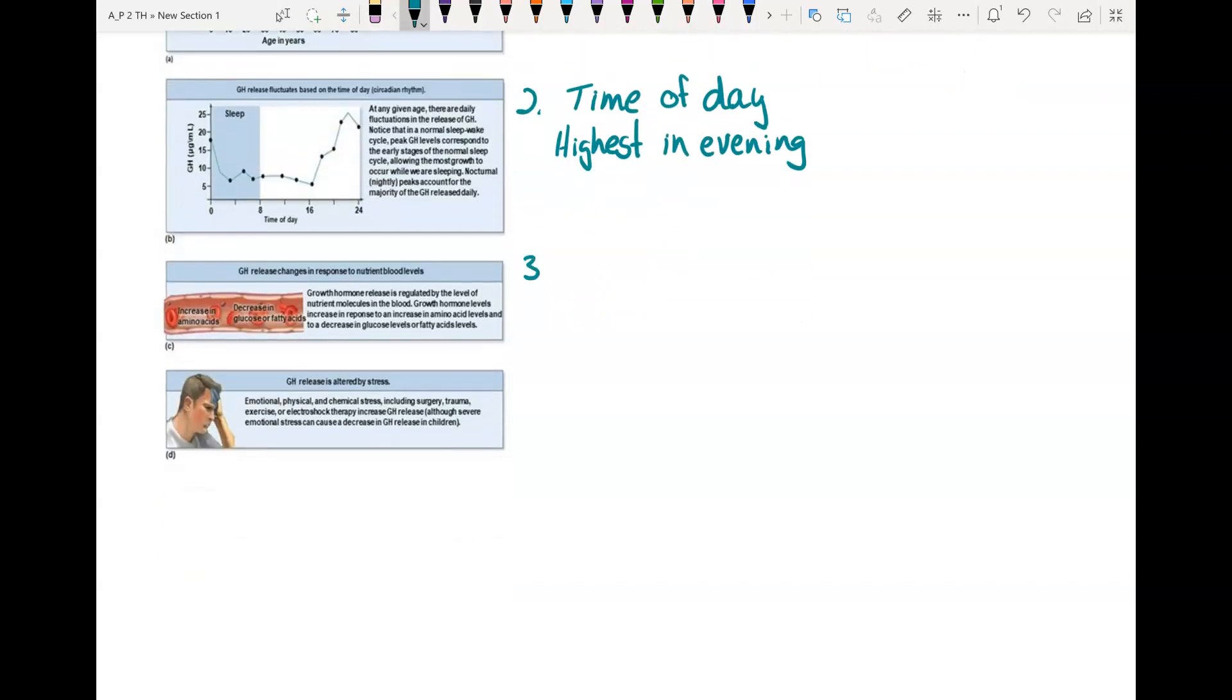Another factor is your blood nutrient levels. This is something else I used to always tell my kids. If you have high glucose, this will reduce your growth hormone. So having lots of soda and candy and all that sugar reduces the amount of growth hormone you have and can kind of stunt your growth. On the other hand, if you have high amino acids, so you're eating lots of protein, that will raise your growth hormone. So eating good healthy foods raises the amount of growth hormone.